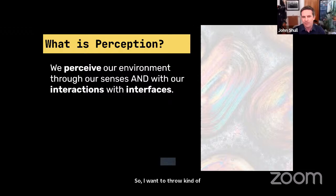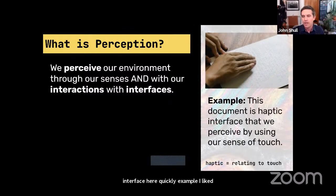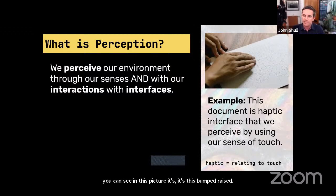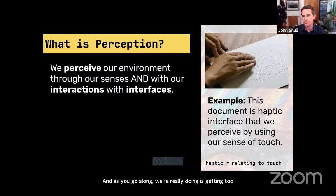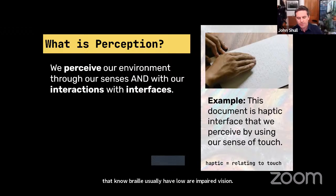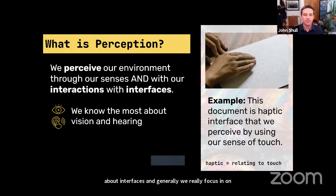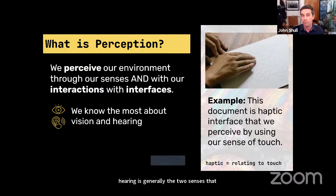I want to give an example of an interface using braille. If you don't know what braille is, think of it as these bumped, raised dots you can feel — it's an interface you can haptically feel, which is a sense of touch. We perceive this through our touch, and what we're really doing is getting textual information through touch. Generally, people who know braille usually have low or impaired vision. With perception, when we focus on interfaces, we unfortunately have a bias toward two senses — eyes and ears, vision and hearing — which are currently the ones we know the most about, largely because they're easier to research. It's really important for the next generation of scientists and engineers to think about all the other senses and do more research there.